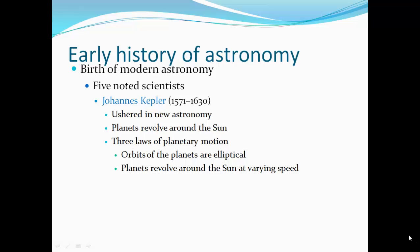Johannes Kepler, 1571 through 1630, he ushered in a new astronomy. The planets revolved around the Sun, and he had three laws of planetary motion that actually explained their orbits. The orbits of the planets are elliptical, that's the first law, and the planets revolve around the Sun at different speeds.